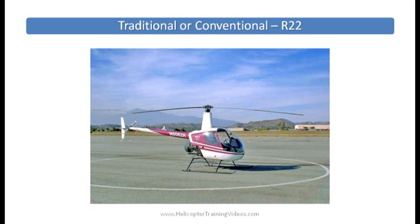First of all, we have the traditional or conventional, which is a main rotor system with a tail to counteract the torque. Examples would be the R22, R44, Schweitzer 300, etc.